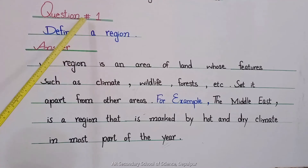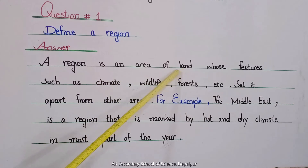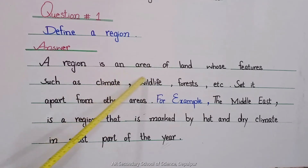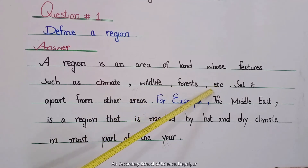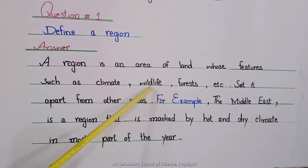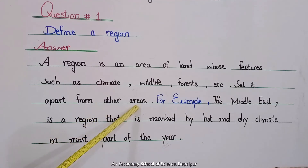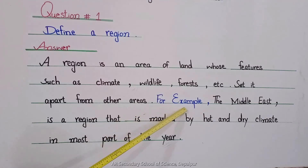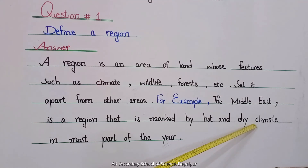Question number one: Define region. Answer: A region is an area of land — region zameen ka ek aisa ilaqa hai — whose features such as climate, wildlife, forest, etc., set it apart from other areas — jo isse baaki areas se different karte hain. For example, the Middle East is a region that is marked by hot and dry climate in most part of the year — saal ke zyadatar hisson mein.